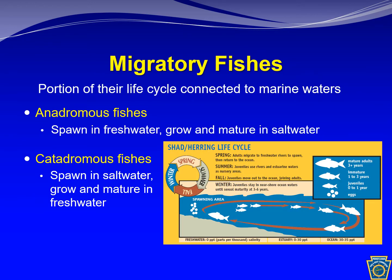The commonality among migratory fishes is their connection to marine waters of the Atlantic Ocean during some portion of their life cycle. Anadromous fishes spawn in freshwater and then grow and mature in saltwater. This is illustrated in the graphic on the screen for shad and herring, where they return in the springtime for spawning, after which the adults return to the ocean. Young and juveniles stay within freshwater estuarine waters but then make it to the Atlantic Ocean at the end of that first summer, where they'll grow to adulthood after three to six years.